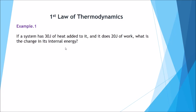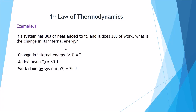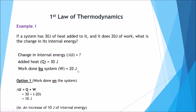As always in physics, we write down the variables that we want to calculate and the variables that we have. We're adding heat so it's a positive 30 joules. Work is done by the system: 20 joules. So let's look at the two ways that we can look at this.